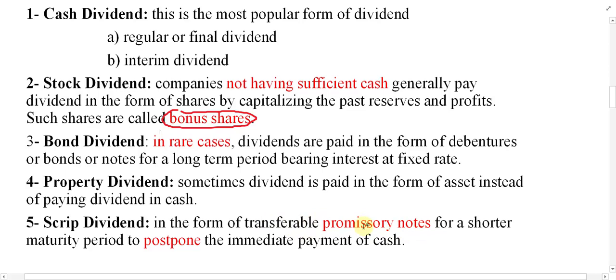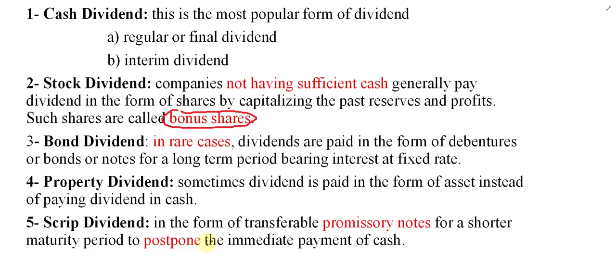The scrip is transferable, meaning shareholders who receive the promissory note can sell it in the money market to a third party and receive cash immediately. The third party can then submit it to the company after one or two months and receive the face value of the scrip. So scrip dividend is simply a note issued to shareholders to postpone their payments. These are the five forms of dividend: cash, stock, bond, property, and scrip.